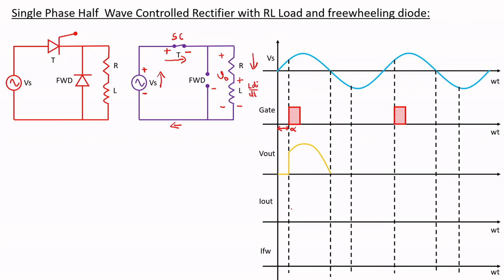What will happen to Iout? Iout also starts at zero because there was no flow of current — the circuit was acting as open circuit at the load. Then Iout will start increasing gradually because we have an inductor, which is an energy storing element. The inductor starts storing energy and some power is consumed at the resistor as well. So the current at the load slowly starts increasing and continues to a maximum value in this particular fashion.